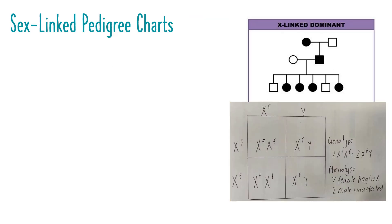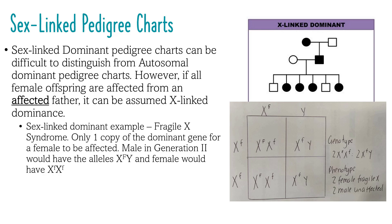Sex-linked or X-linked pedigree charts can often be difficult to distinguish from autosomal pedigree charts. However, there are some key differences. Affected fathers will pass on the X-linked trait to daughters but not to sons. The affected mother will pass on the X-linked trait to both daughters and sons. If the father is affected, all of his daughters will be affected. Also, the affected father's mother will be affected. Generally, the trait will be expressed by females more often than males. An example of this is fragile X syndrome — only one copy of the dominant gene is required for a female to be affected.